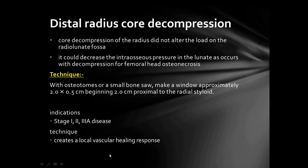Distal radial core decompression does not alter the load on the radiolunate fossa; instead, it decreases intraosseous pressure in the lunate, similar to decompression for femoral head osteonecrosis, resulting in improved blood circulation. The technique involves making a window approximately 2 × 2.5 cm beginning 2 cm proximal to the radial styloid at the axial shaft and metaphyseo-epiphyseal junction. It is indicated in Stage 1, 2, and 3A disease. The mechanism is that it creates a local vascular healing response.